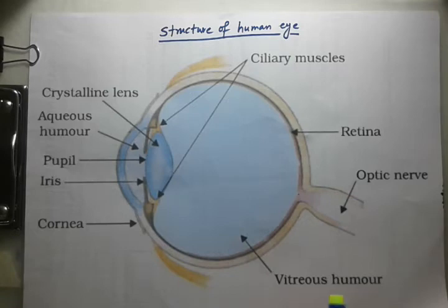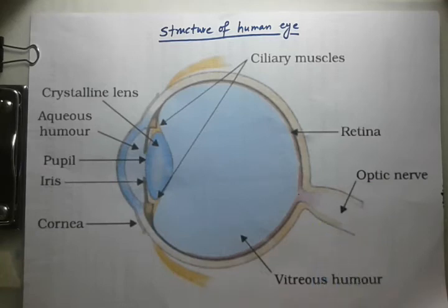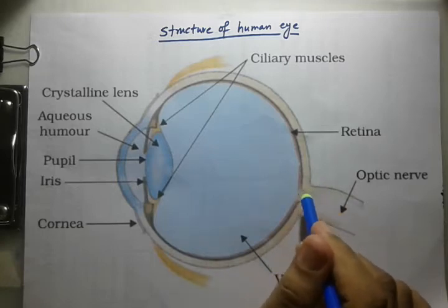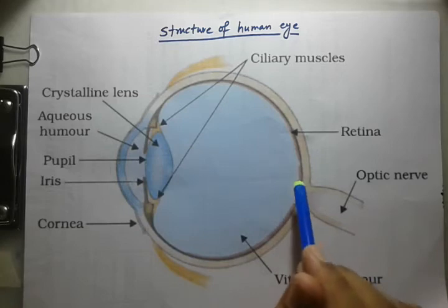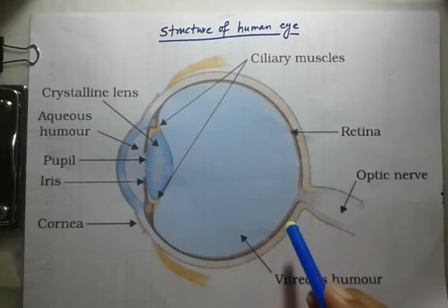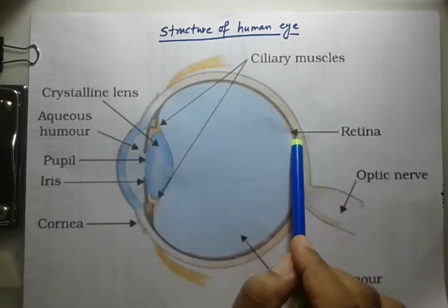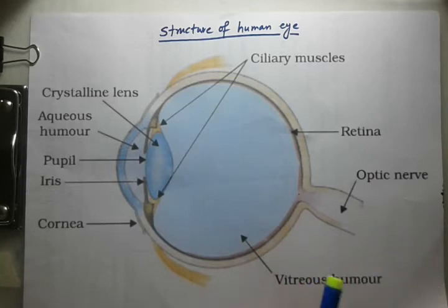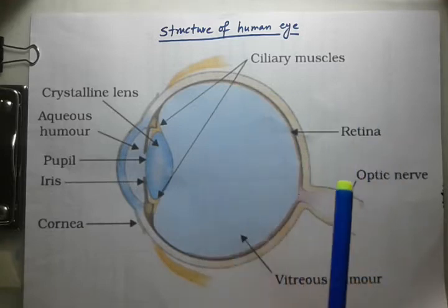The blind spot is the region where the optic nerve enters the eyeball — there are no rod cells or cone cells there, so this region is totally insensitive to light, and that point is known as the blind spot. The yellow spot is located exactly behind this region, at the center of the retina, and has the maximum concentration of light-sensitive cells.